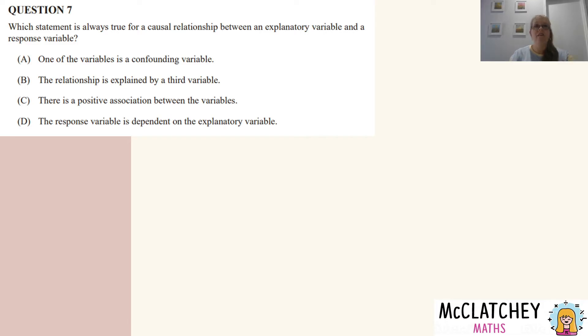Question seven: which statement is always true for a causal relationship between an explanatory variable and a response variable? Now they're really testing on this paper our understanding of some key bivariate data concepts. So really language is a really important component of these questions. So a causal relationship is one where one variable has an effect on the other. The explanatory has a definite effect on the response variable.